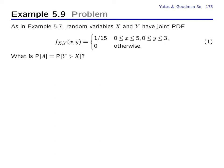Continuing with lecture 17, let's solve this problem. We have the joint PDF defined on a box where x goes from 0 to 5, y goes from 0 to 3. The question we're asked is: what is the probability that y is greater than or equal to x? The key to this problem is identifying the region y ≥ x and setting up the integral to calculate the probability.